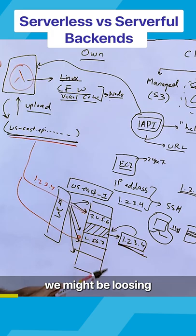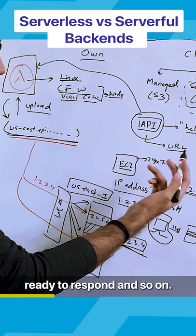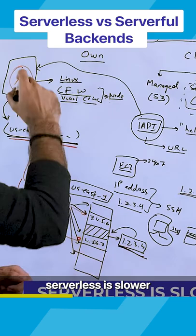Now, you might be thinking that when Lambda actually executes and provisions all this infrastructure, we might be losing a lot of time in the provisioning part compared to the EC2 part because here we already have the infrastructure with us. The app is already running, ready to respond and so on.